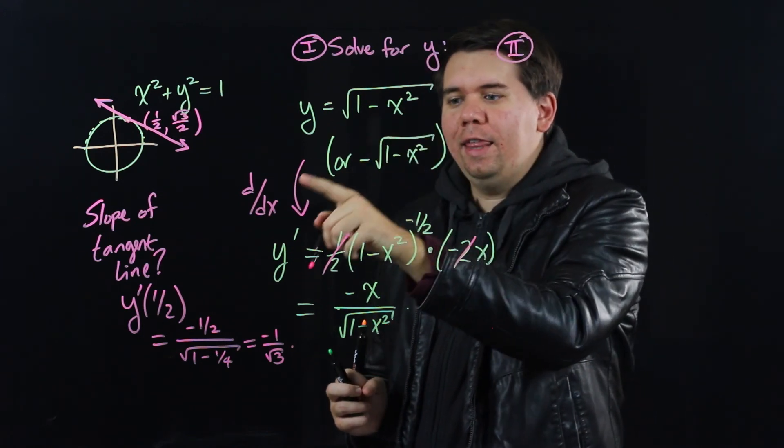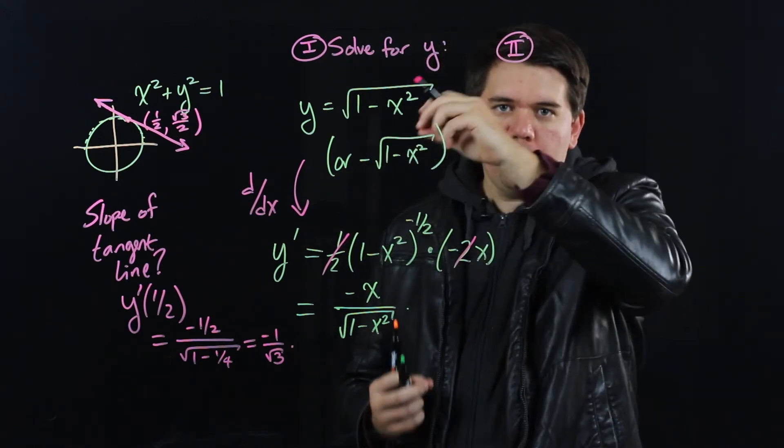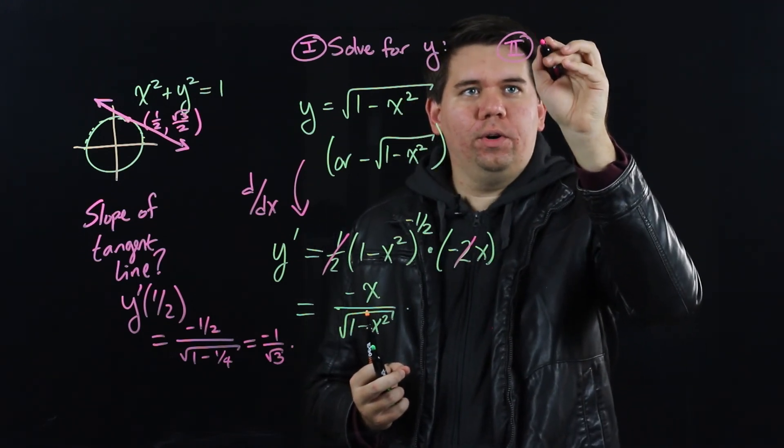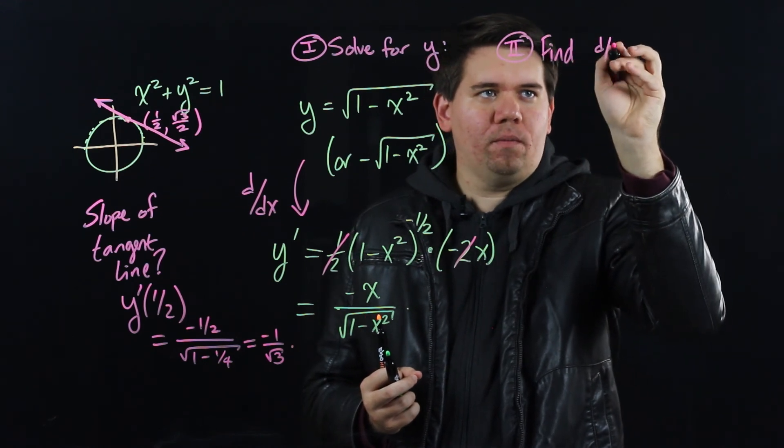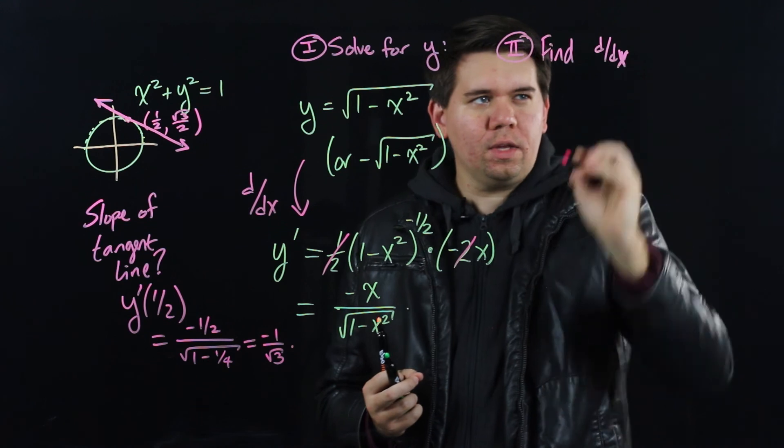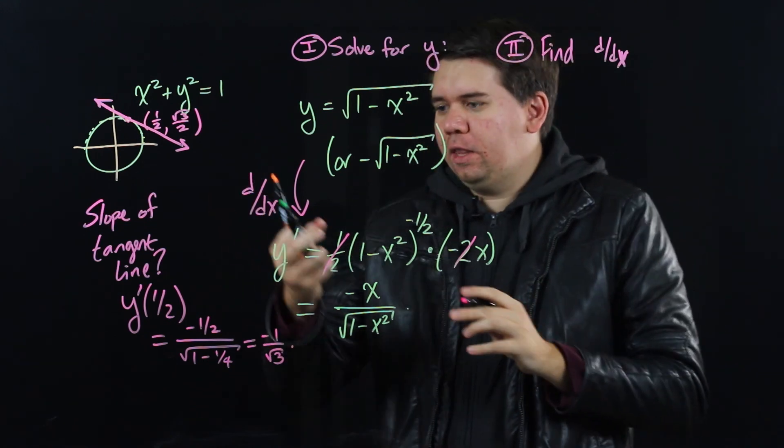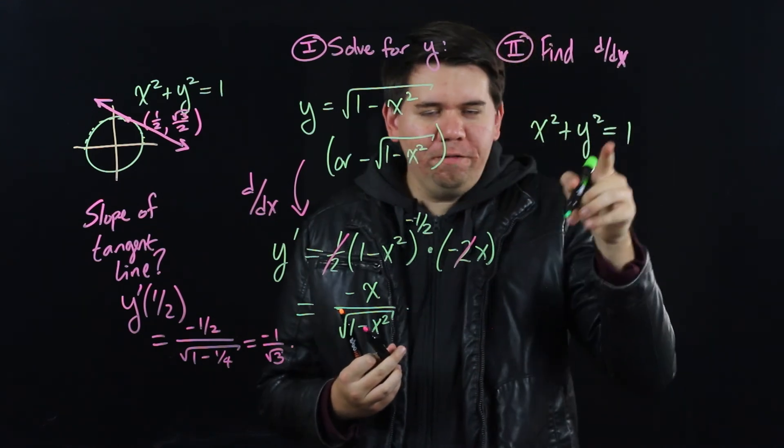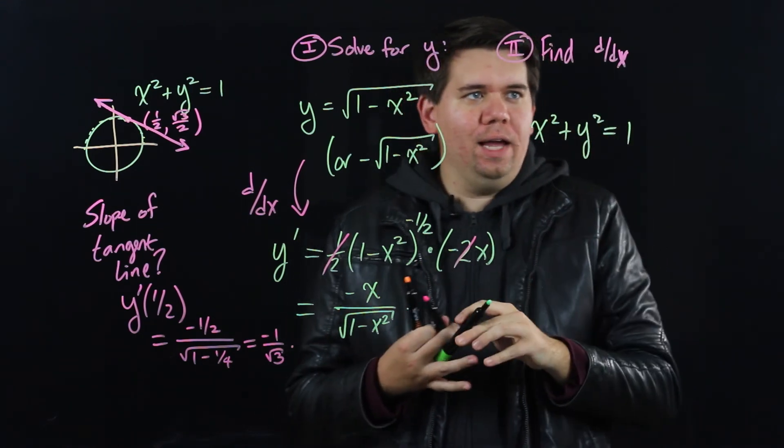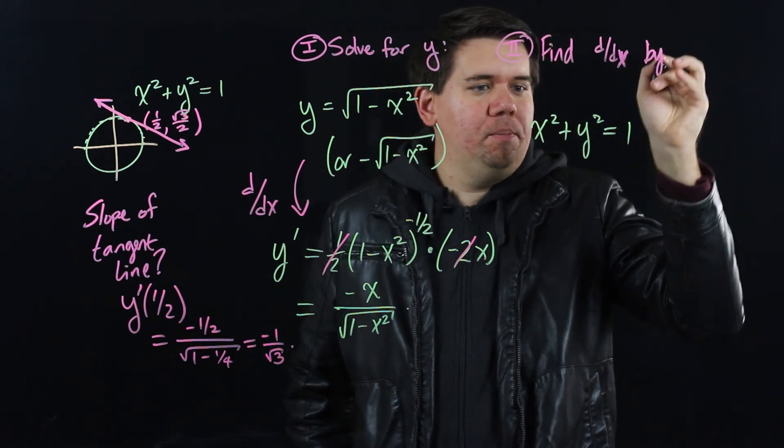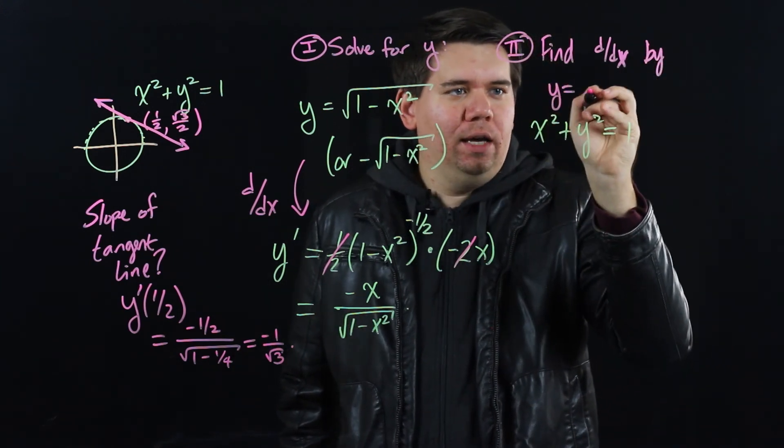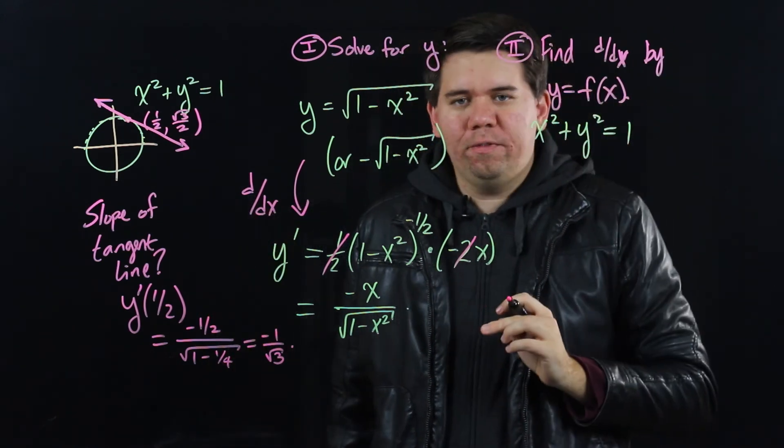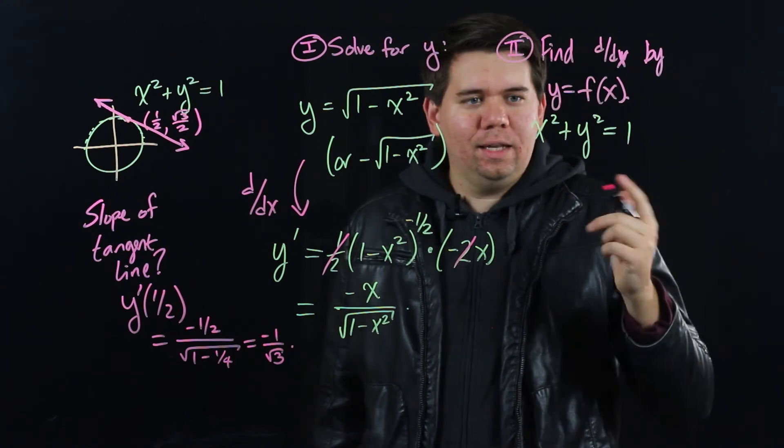Instead of solving for y and then calculating the derivative, we're going to just reverse the process. We're going to calculate the derivative. We're going to find the derivative dy/dx. But how? I mean you look at the problem. You look at x squared plus y squared equals 1. You're like how do you find the derivative of this thing? Well we're going to find the derivative by treating your y as just some unknown function of x. I don't know what it is but let's just say y is some function of x.